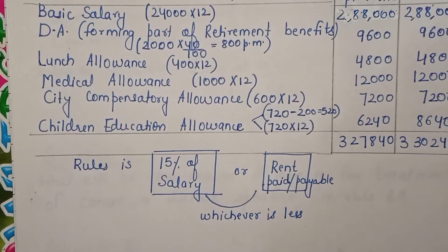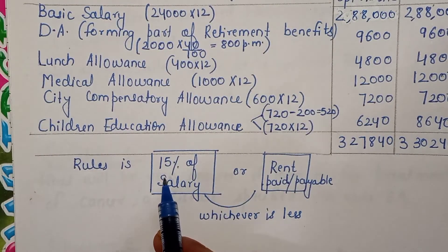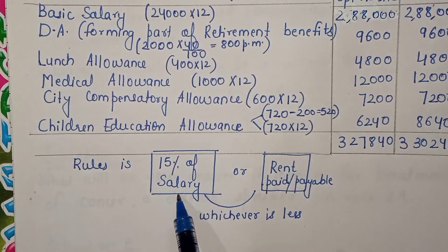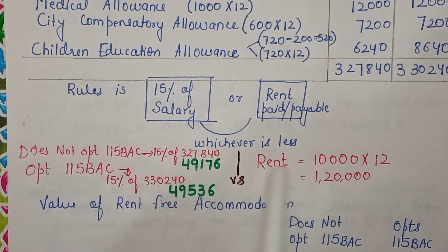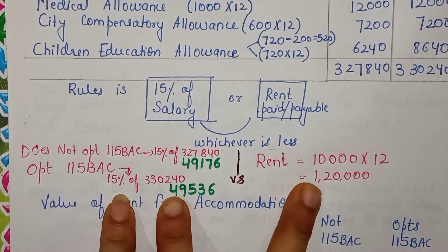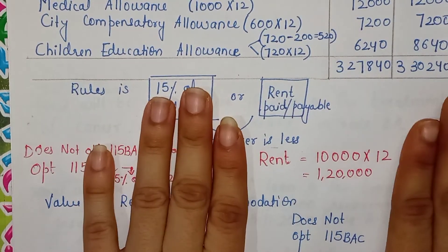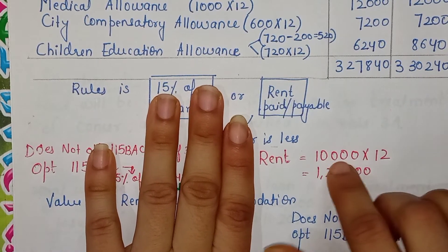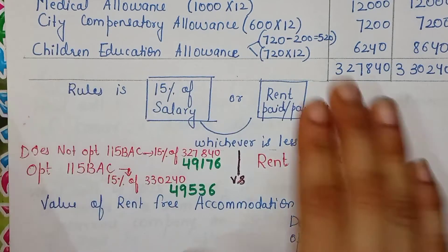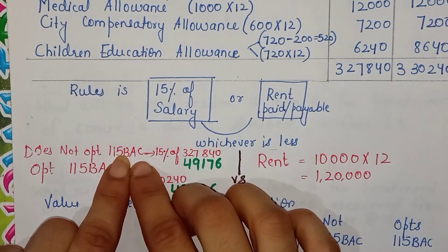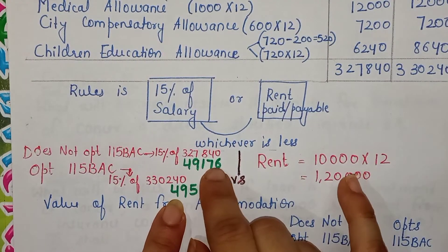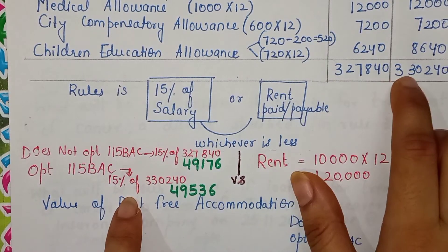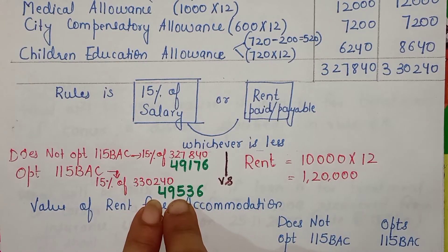We have calculated the salary and now apply the golden rule. RBI paid rent of 10,000 per month × 12 = 1,20,000. Comparing with 15% of salary: without 115 BAC — 15% of 3,27,840 = 49,176; with 115 BAC — 15% of 3,30,240 = 49,536. In both cases, 49,176 and 49,536 are less than 1,20,000. So we take the lower figure — 15% of salary — as the value of unfurnished rent-free accommodation.